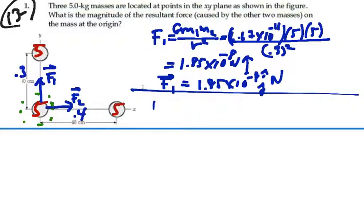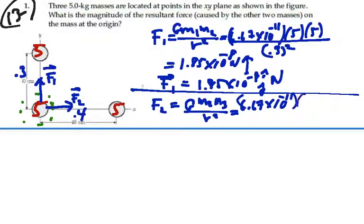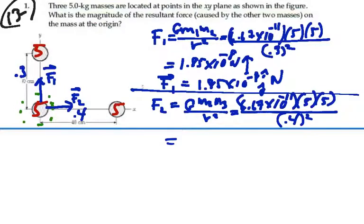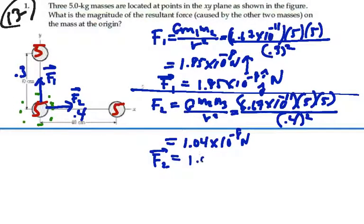The other force, F2, has a magnitude of G times mass 2 times mass 3 over the distance between them squared. That's 6.67×10⁻¹¹ times 5 kilograms times 5 kilograms, and the distance between them is 0.4 meters squared. That gives a magnitude of 6.67×10⁻¹¹ times 25 divided by 0.4 squared, which is 1.04×10⁻⁸ newtons. Written as a vector, F2 = 1.04×10⁻⁸ i newtons.